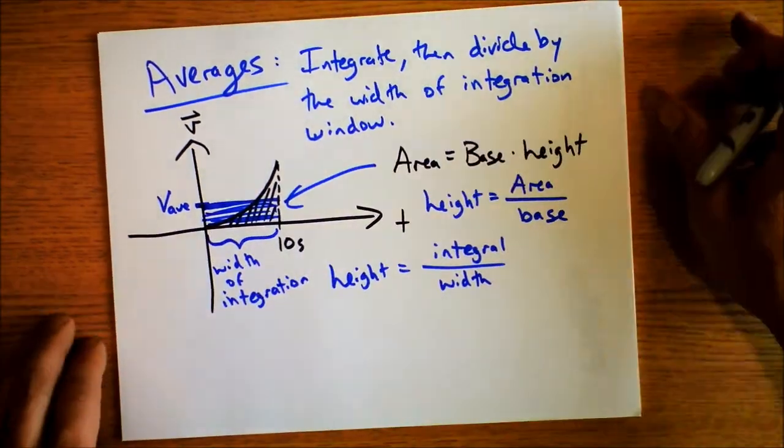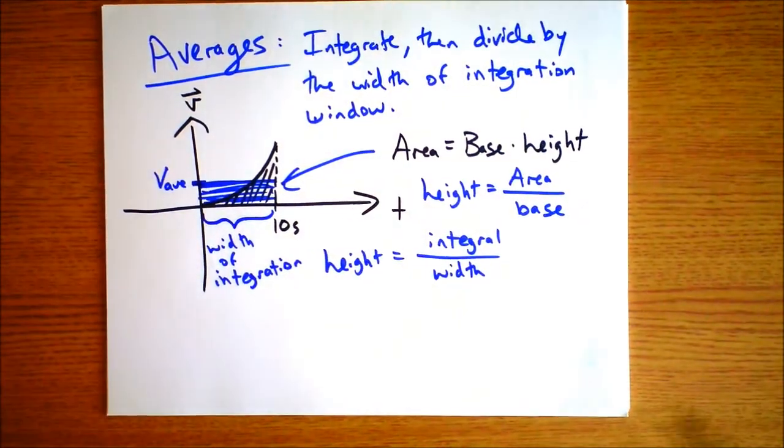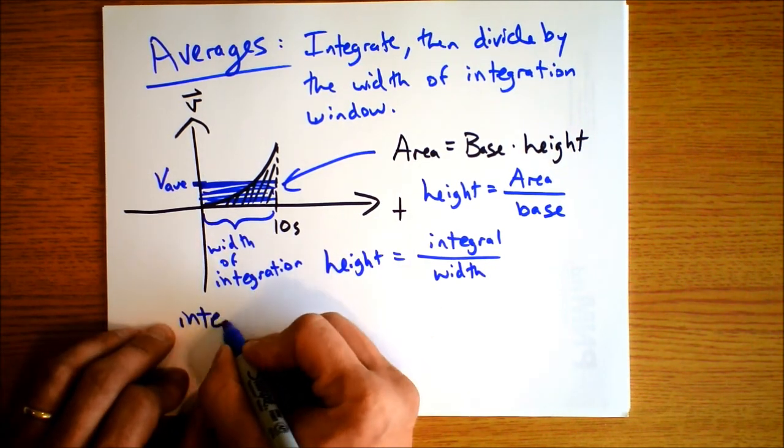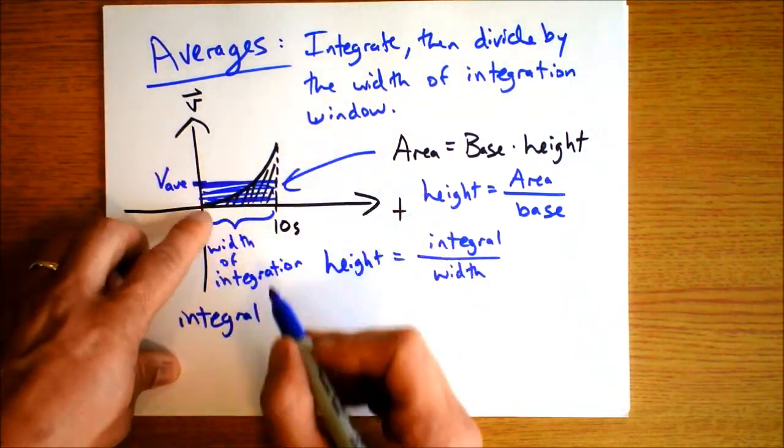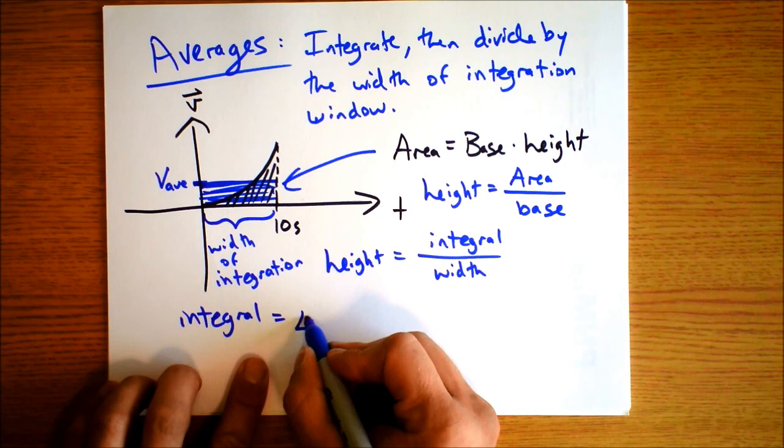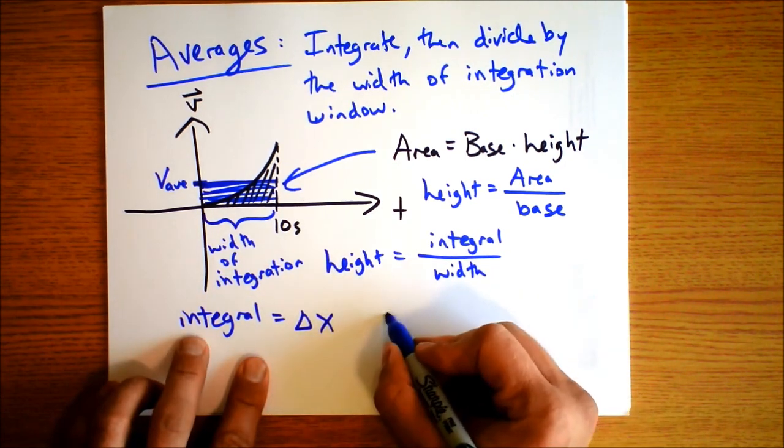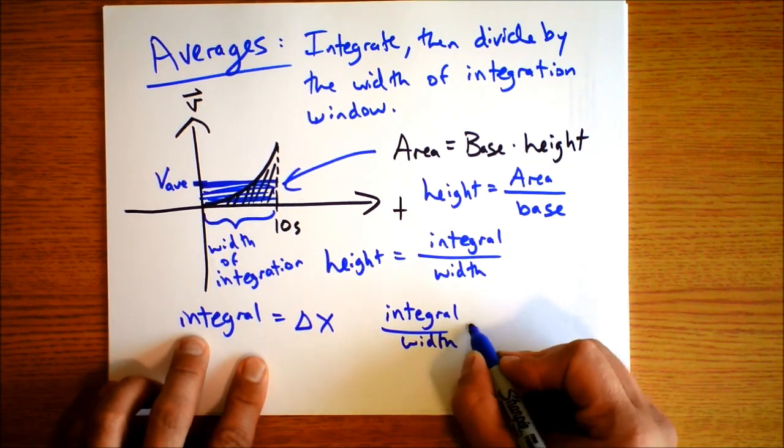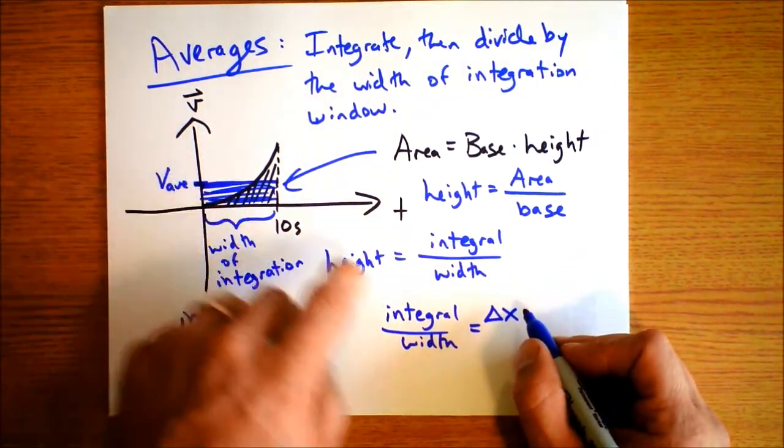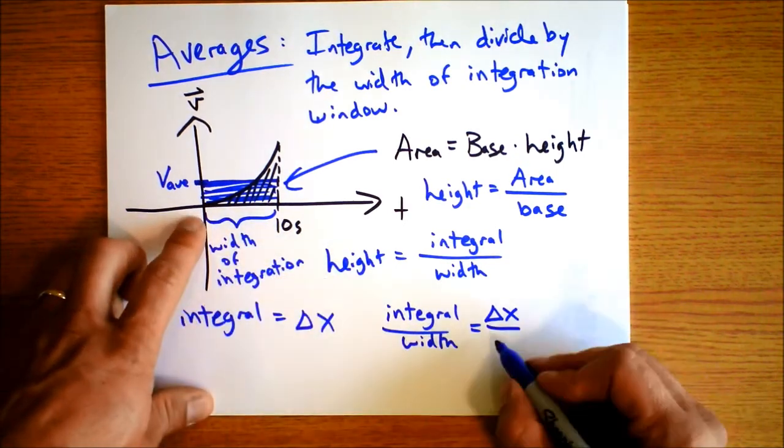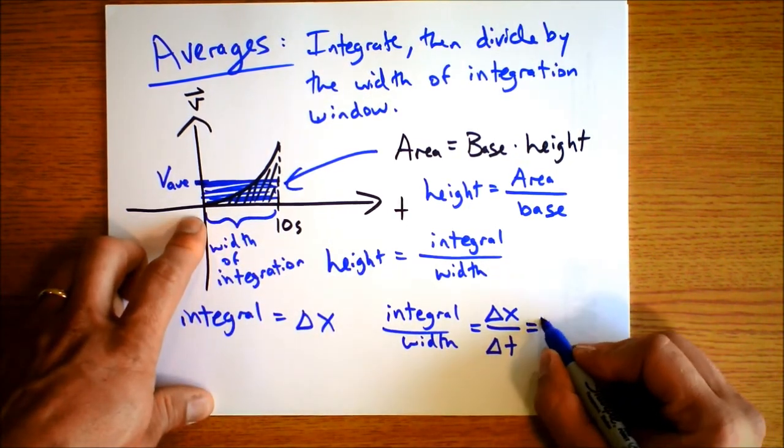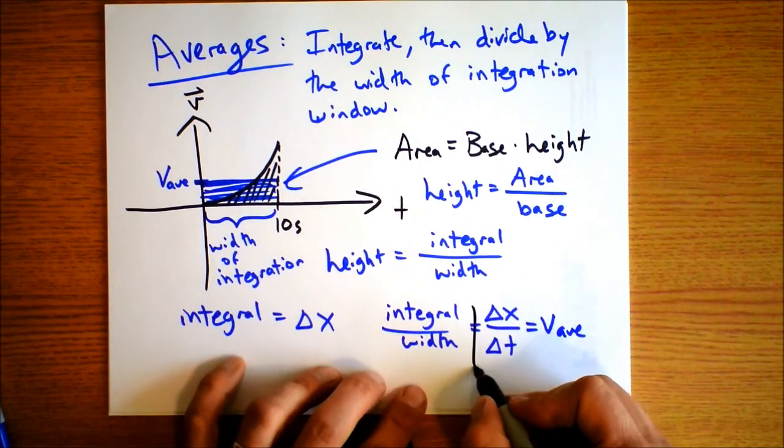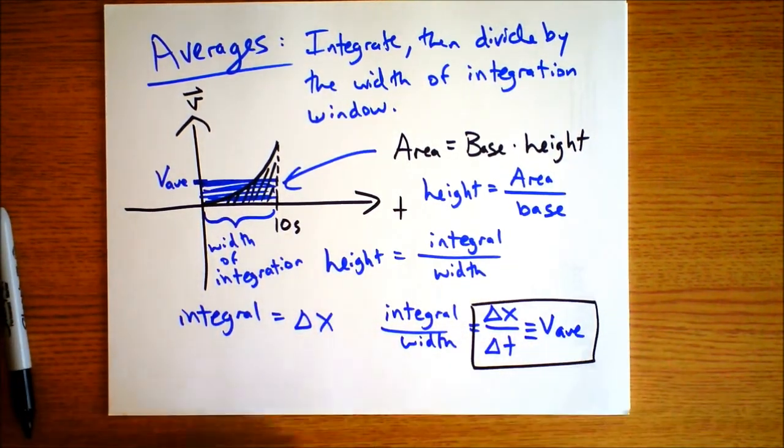That's the integration window right here. Width of integration. Integral divided by width. Okay, so as another example of what's going on here, we need to consider, for this, if the integral is delta x, I've told you that if you integrate velocity over time, you get displacement. If the integral is delta x, then the integral divided by the width is equal to delta x divided by delta t, and that's average velocity. That's the definition of average velocity that we've seen many times. Look at that. Three stripes because that's the definition.